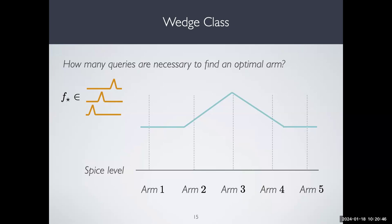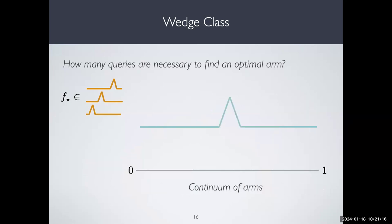For example, with the wedge class: if you query an arm and you get zero, you know you're in the flat part. If you find some slope, you can start figuring out where in the wedge you are. If you know the width of the wedge, you can query at intervals of that width until you find the wedge parts and learn the wedge. So the wedge class allows efficient learning — I'll come back to it later.